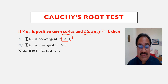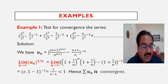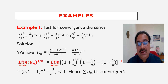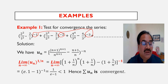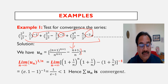Let us apply this test to a problem. Test for convergence the series: 2²/1² − 2/1 whole power −1 + 3³/2³ − 3/2 whole power −2 + 4⁴/3⁴ − 4/3 whole power −3 and so on. You can see the pattern: the exponents are −1, −2, −3. By observing the pattern, the nth term u_n can be written as: (n+1)^(n+1) / n^(n+1) − (n+1)/n, whole power −n.